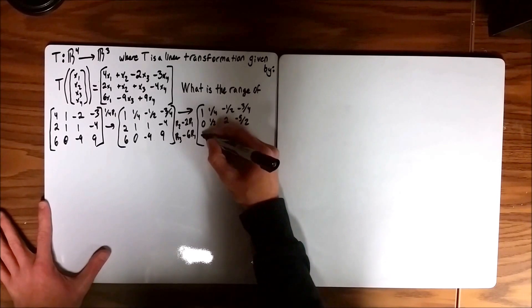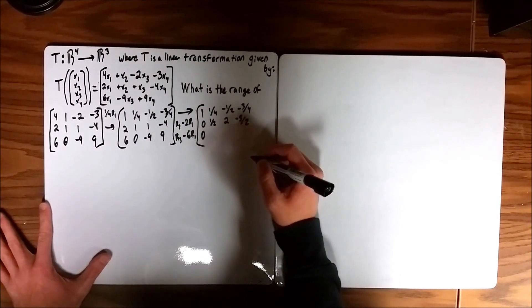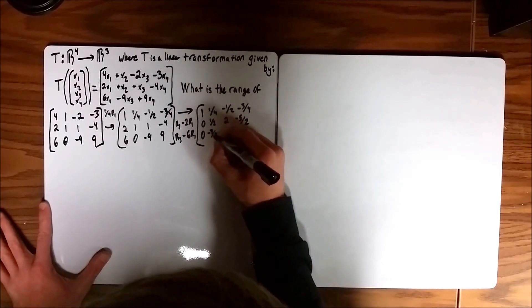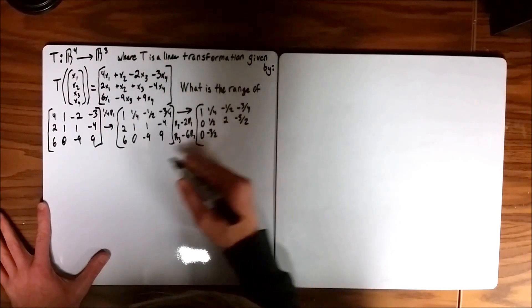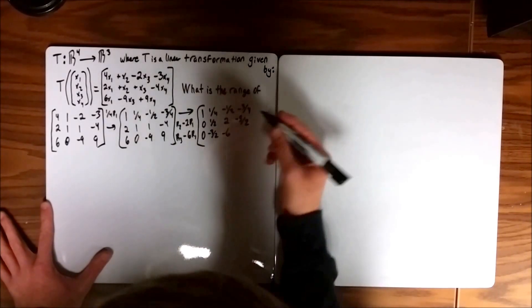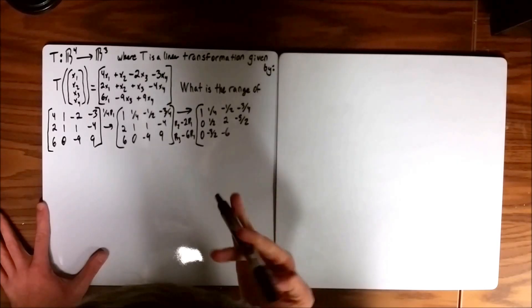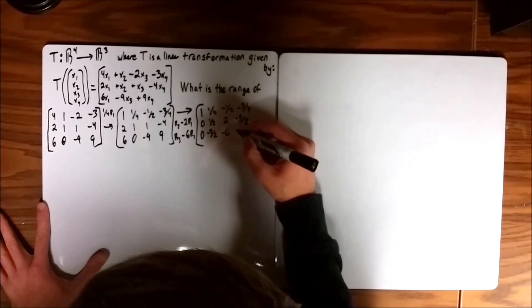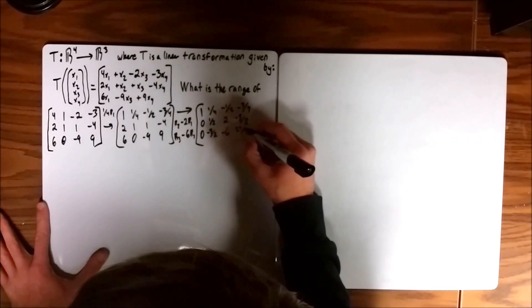And then the next row, again you're going to have 0 because that's what we're trying for. And then you're going to have negative 6 over 4 which reduces to negative 3 over 2. And then negative 9 plus 3 is negative 6. And then 6 times 3 is 18, 9 plus 18 over 4 is 27 over 2.